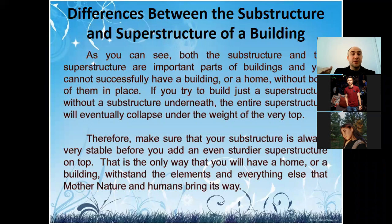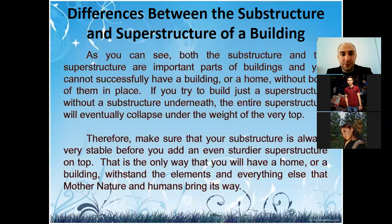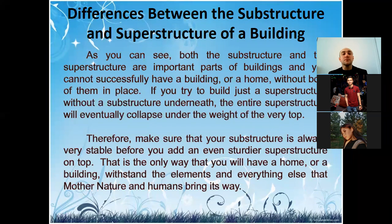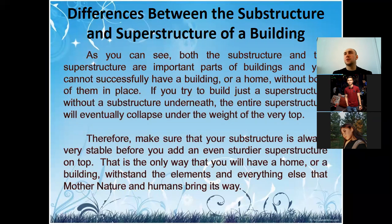The superstructure extends from the top of the plinth to the top of the building — meaning up to the top of the roof covering. The superstructure transfers loads from the upper part of the building down to the substructure. It includes main bearing elements like walls, columns, beams, slabs, coverings, and roofs, as well as non-bearing constructions like partitions, openings such as windows and doors, and lintels.